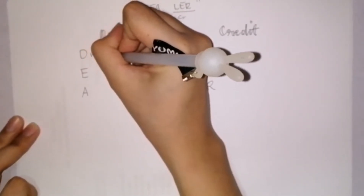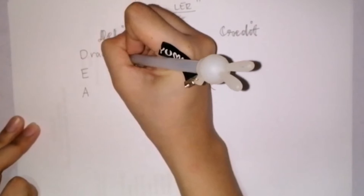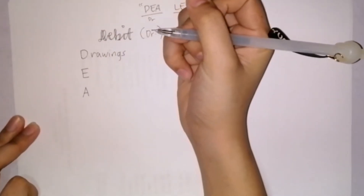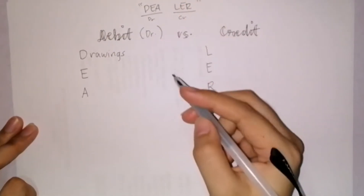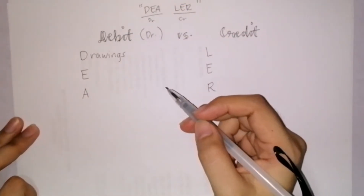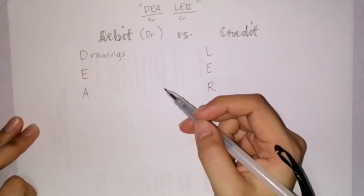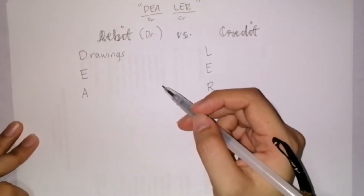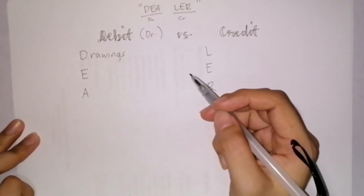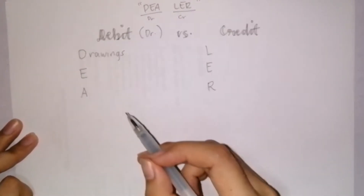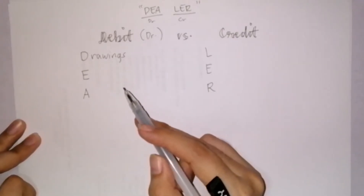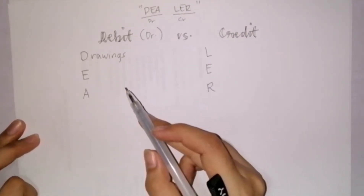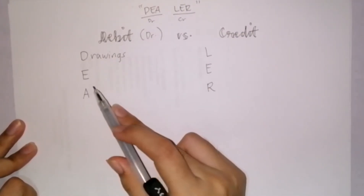Let's start with D. D is for drawings or withdrawals. This refers to when the owner withdraws from the business for personal use. Whenever there's a withdrawal from the business by the owner, you debit a drawings account.